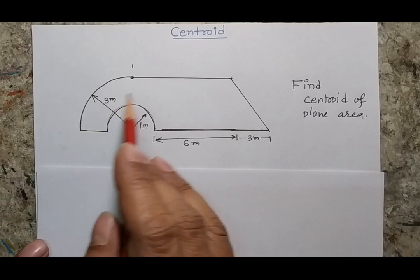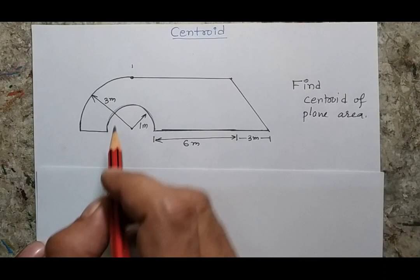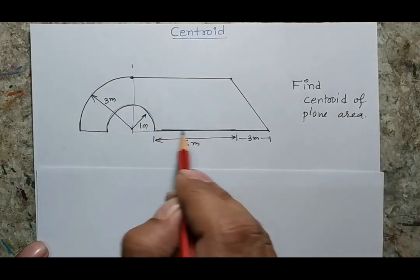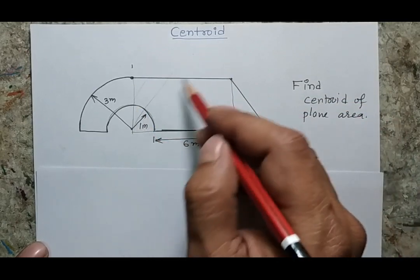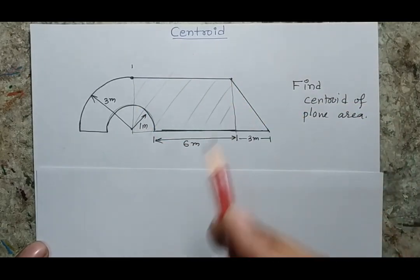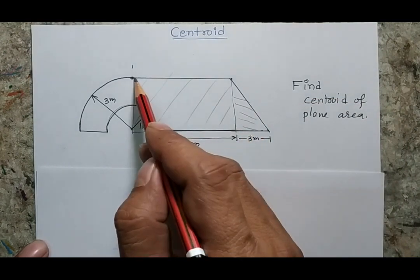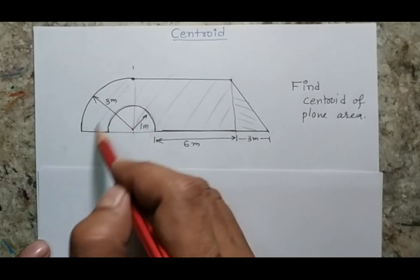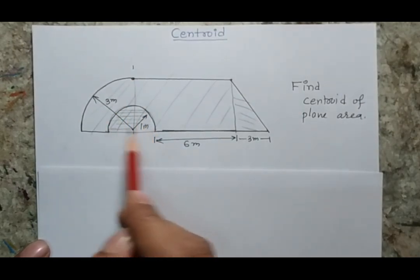If I see this figure carefully, I will be able to identify four different sections. One section would be this complete rectangular body, the second section could be this triangular body, the third could be this one-fourth arc, and the fourth one would be this semicircle.